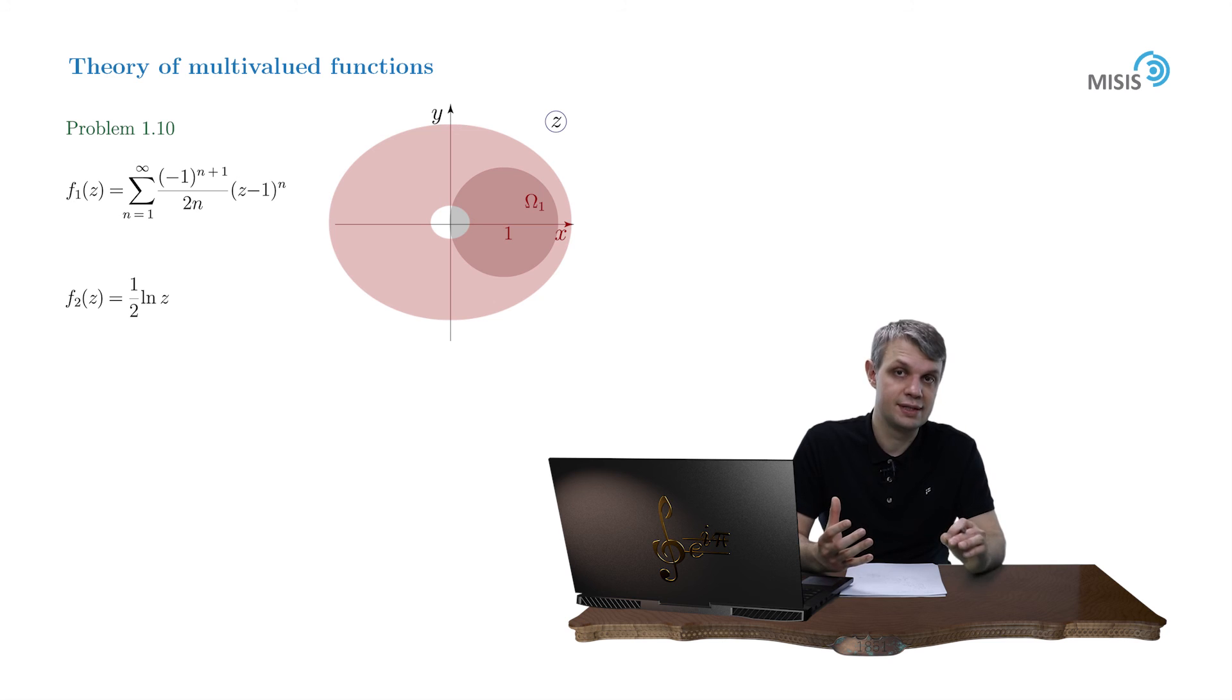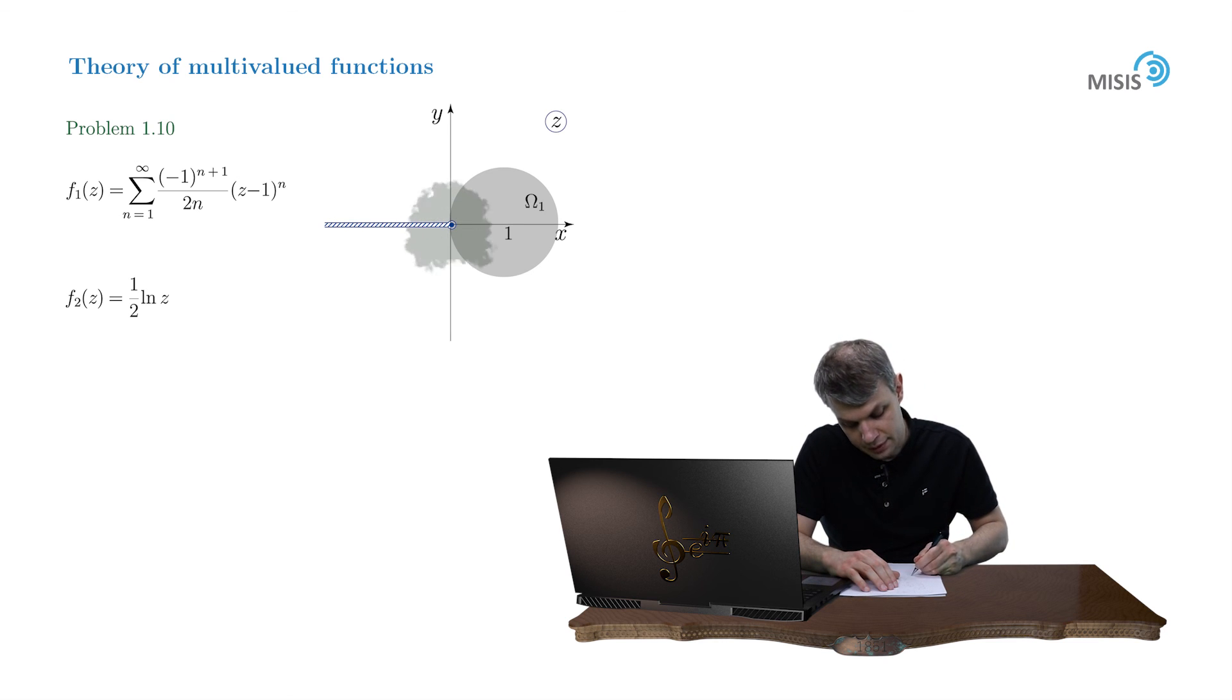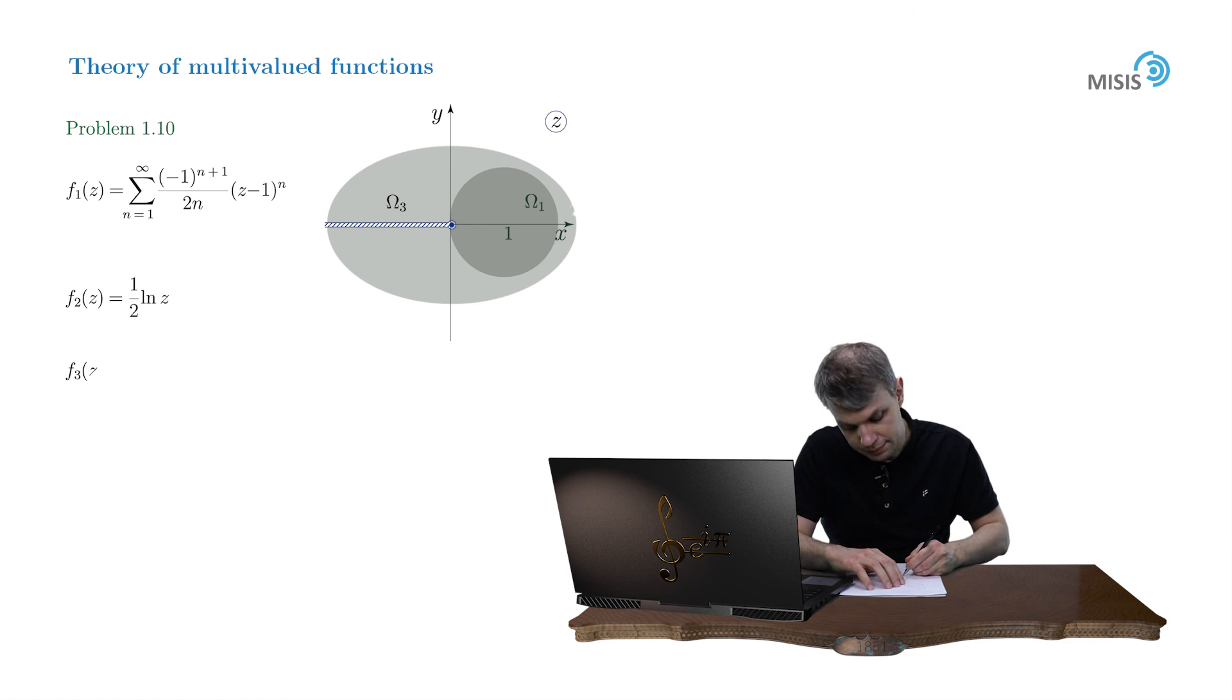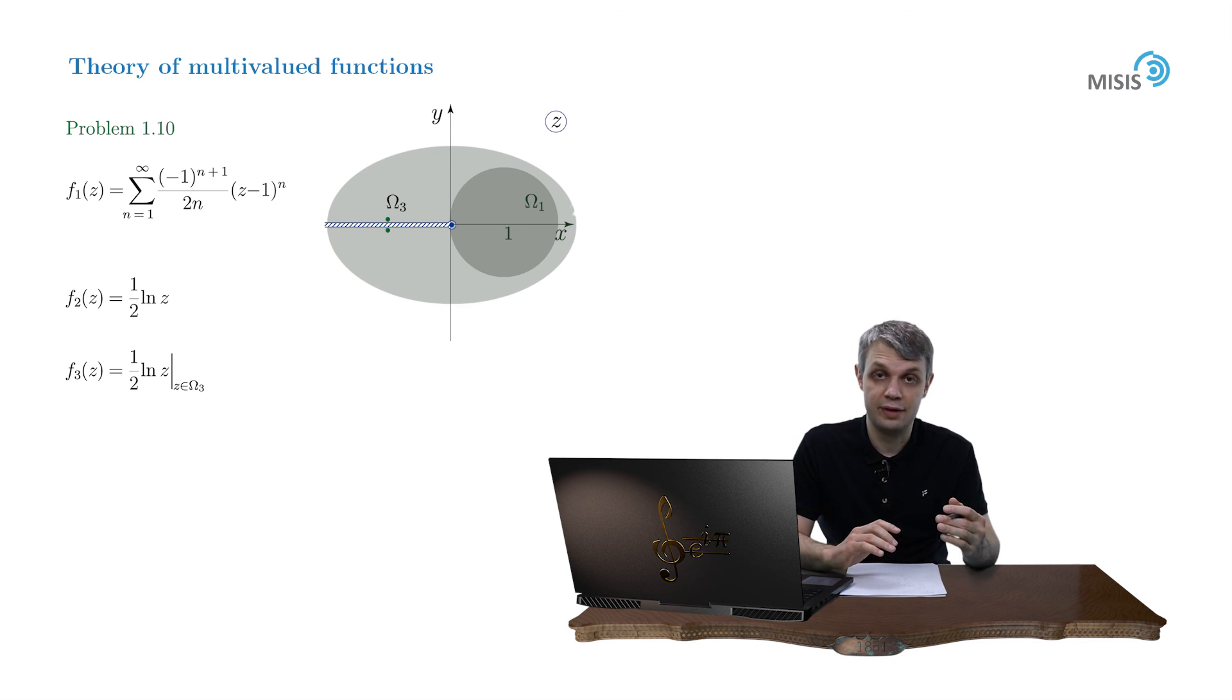And we have to conclude that the largest domain to which our initial function f₁ of z can be analytically continued is the entire complex plane with a branch cut, the one which of course doesn't cross the initial domain. As there are many ways to draw this branch cut, there are many associated analytical continuations. It seems natural to draw a branch cut along the real negative semi-axis. Let's call the corresponding domain, the entire complex plane with this cut, Ω₃, and the corresponding analytical continuation of function f₁ of z over this domain, f₃ of z.